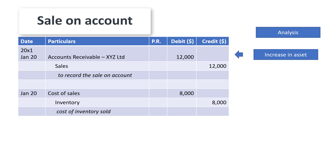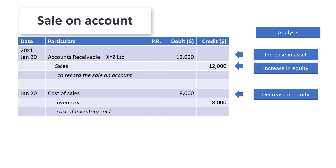In analysis, we have an increase in asset — that is accounts receivable — as we're expecting the customer to pay later on, and then an increase in equity represented by the sale. Increase on one side and increase on another side makes the equation balance. The next one is a decrease in equity and a decrease in asset, representing the inventory coming out of the entity.